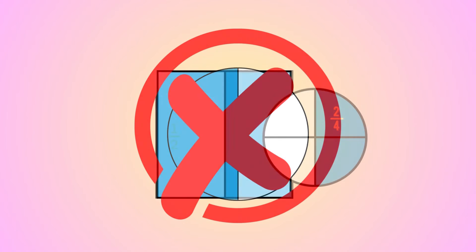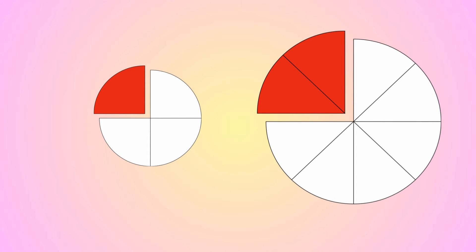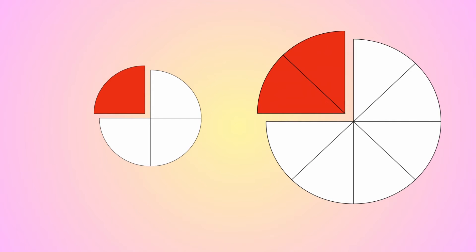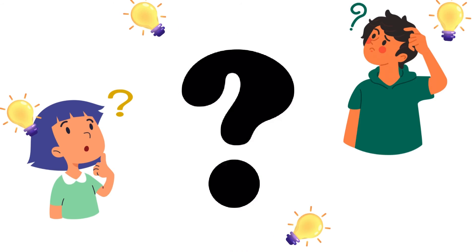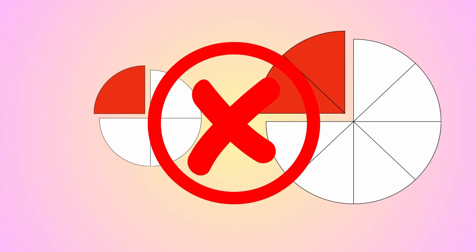Correct! They cannot represent equivalent fractions because they are not the same size. Let's take a look at these two models. We have one small and one big — a small circle and a big circle. Do they represent equivalent fractions? Can we use them to represent equivalent fractions? No! Very good job, guys! They cannot represent equivalent fractions because they are not the same size.